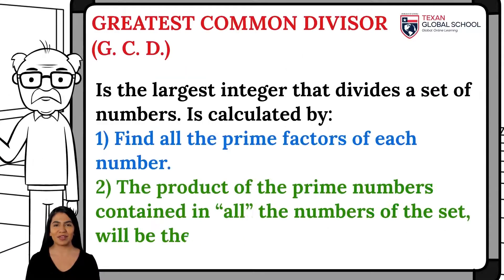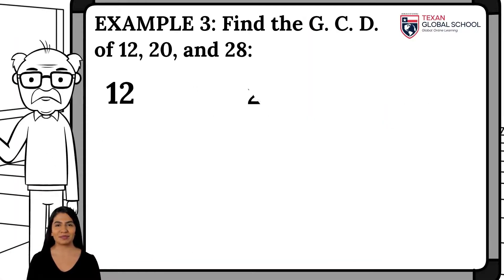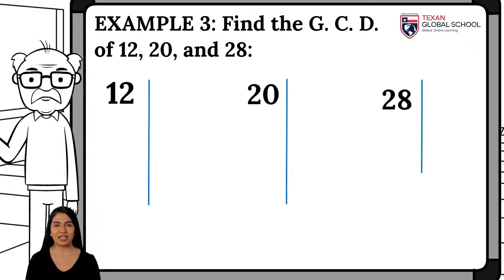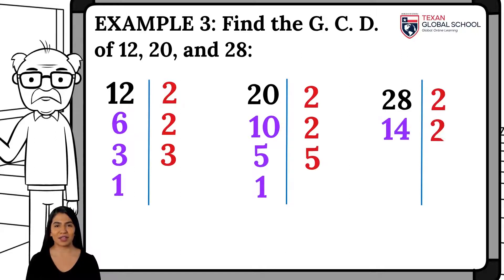Remember that the greatest common divisor is the largest integer capable of dividing a set of numbers. It is obtained by calculating the prime factors of each number; the product of those prime factors shared by all the numbers is the GCD. For example, we will find the GCD of 12, 20, and 28. The prime factors of 12 are 2, 2, and 3. The prime factors of 20 are 2, 2, and 5. The prime factors of 28 are 2, 2, and 7.